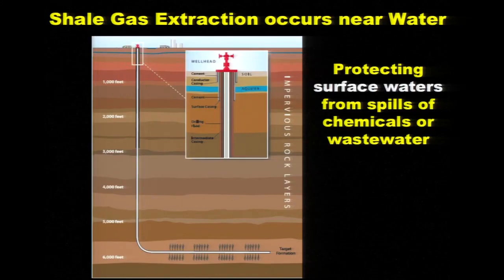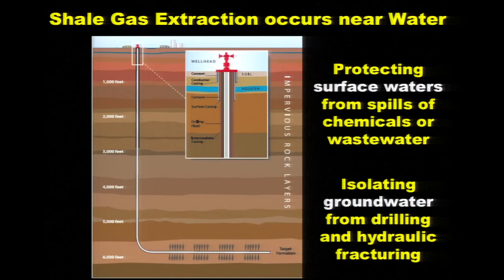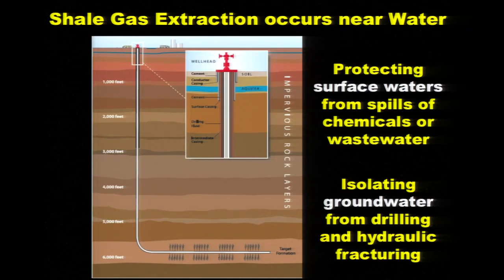When you do this kind of development, it's critically important that you protect the surface water from spills of the chemicals used in this operation and of the water that comes back to the surface. That is hardly surprising — there are really no industries where you wouldn't say there's a potential for something affecting our water resources. It's also critical that we isolate groundwater from this drilling activity and from the hydraulic fracturing chemicals. That's a fairly unique aspect of this industry, but again, all industries affect our water resources.